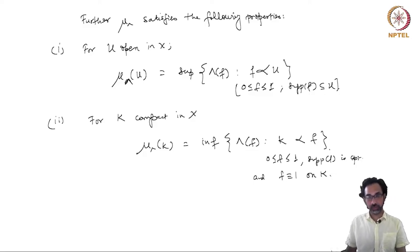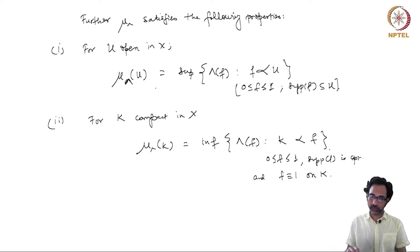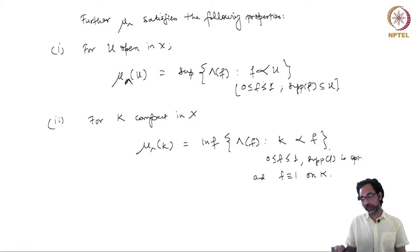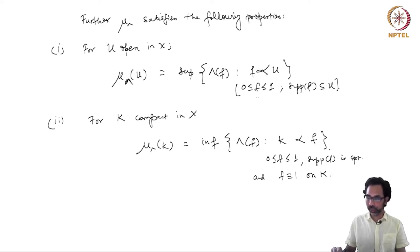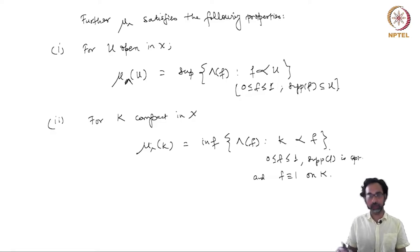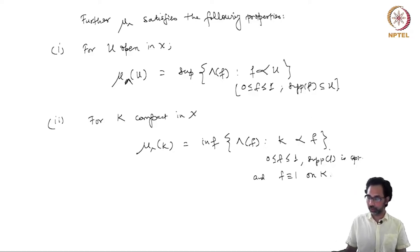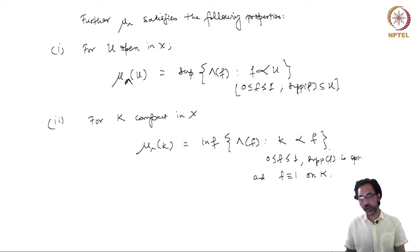In addition to being a Radon measure, μ_λ satisfies these two properties: its values on open sets are given by the supremum of λ(f) where f ranges over functions with compact support inside U taking values between 0 and 1, and similarly for K compact, the value μ_λ(K) is given by the infimum of λ(f) where f ranges over all functions with compact support between 0 and 1 and identically equal to 1 on K.